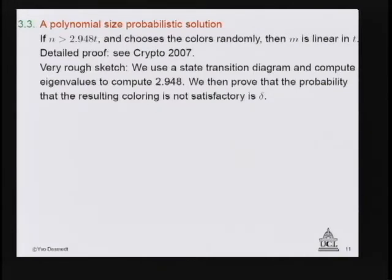Can we do better? Yeah, we can do better if we increase the n. If we don't go for an optimal n and if you let n go larger than 2.948 times t and we choose the colors randomly, then actually n can be linear in t. And the detailed proof I'm not going to go over. It basically uses transition diagrams and eigenvalues, and with that we compute 2.948. And we prove that if you want the probability that the resulting coloring is not satisfactory to be very small, let's say delta, then this 2.948 guarantees that this will be the case.